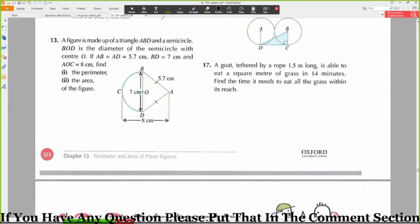The figure is made up of a triangle ABD and a semicircle. BOD is the diameter of the semicircle with center O. If AB equals AD equals 5.7 cm, BD equals 7 cm, then AOC equals 8 cm.